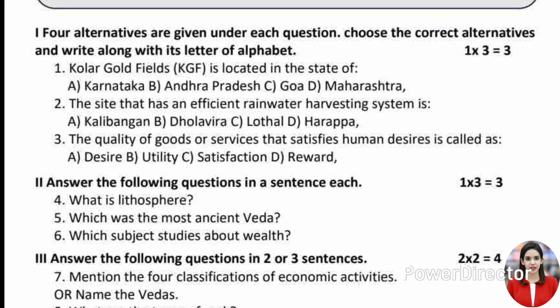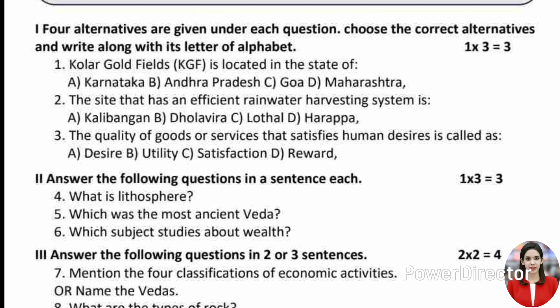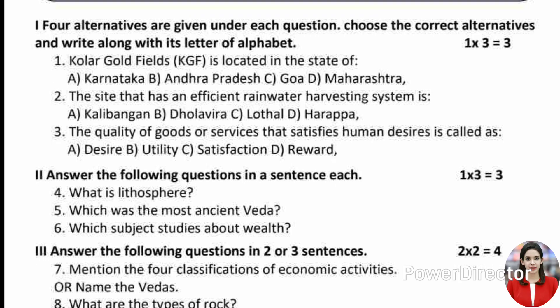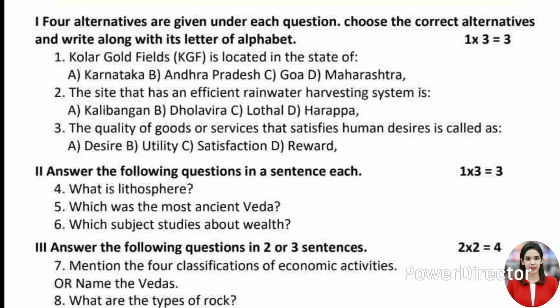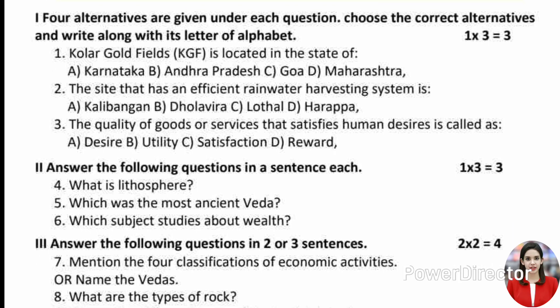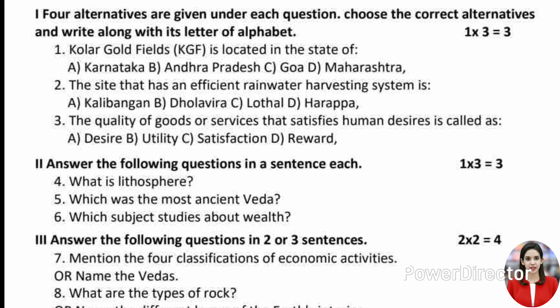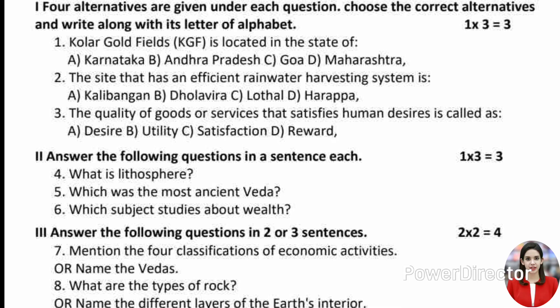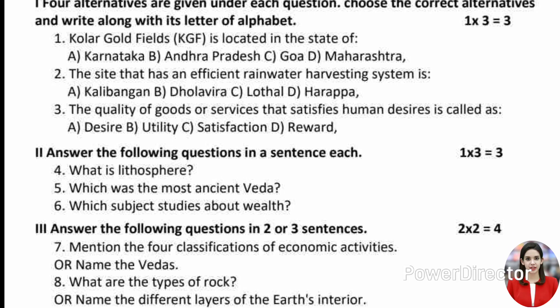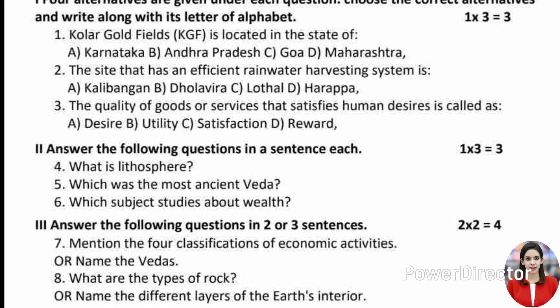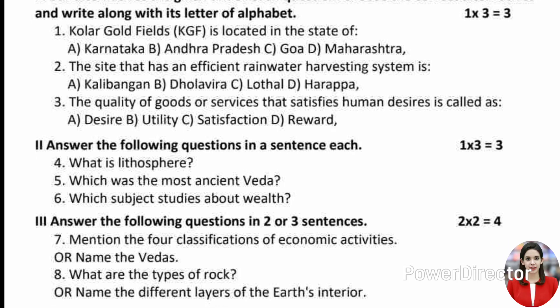Question 3: The quality of goods or services that satisfies human desires is called — A. Desire, B. Utility, C. Satisfaction, D. Reward.